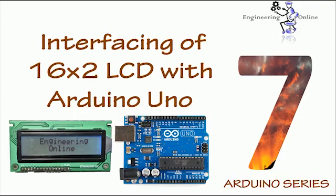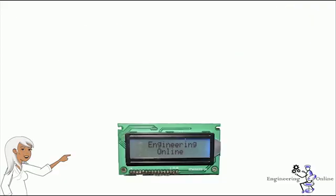Hello and welcome back to Engineering Online. To establish good communication between the human world and the machine world, display units play an important role — that is why they are an important part of embedded systems. In this tutorial, we are going to interface a 16 by 2 LCD with Arduino Uno. Unlike normal development boards, interfacing an LCD with Arduino is quite easy; we just have to define the pin numbers and it will be ready to display data.